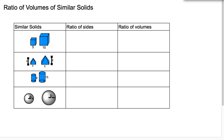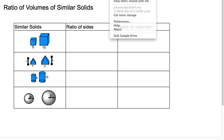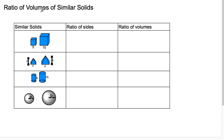Today we're going to talk about the ratio of volumes of similar solids. Similar to what we did last time with the area of objects, we're going to talk about the volumes.